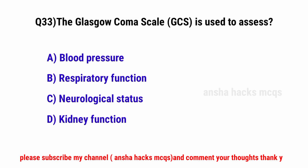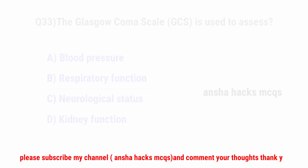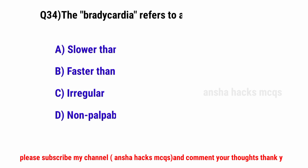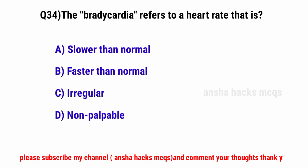Question No. 33 (implied). The correct option is C: Neurological status. Question No. 34. Bradycardia refers to a heart rate that is — the correct option is A: Slower than normal.